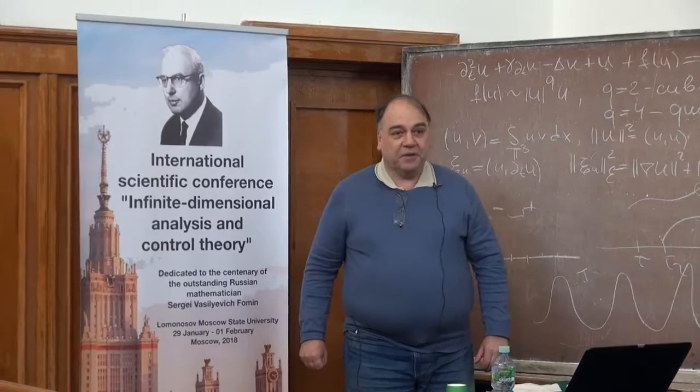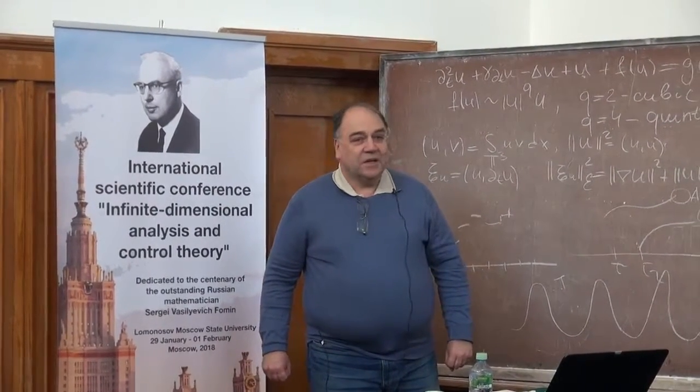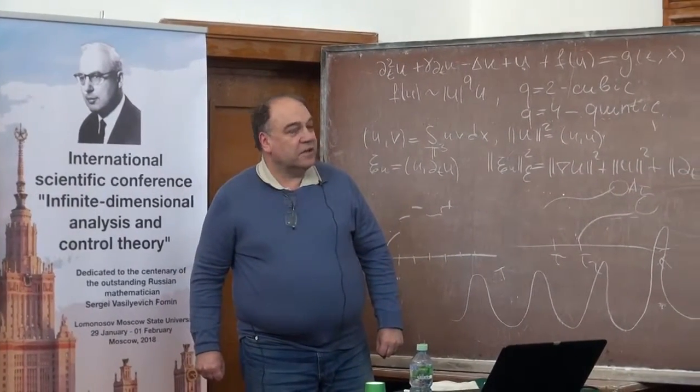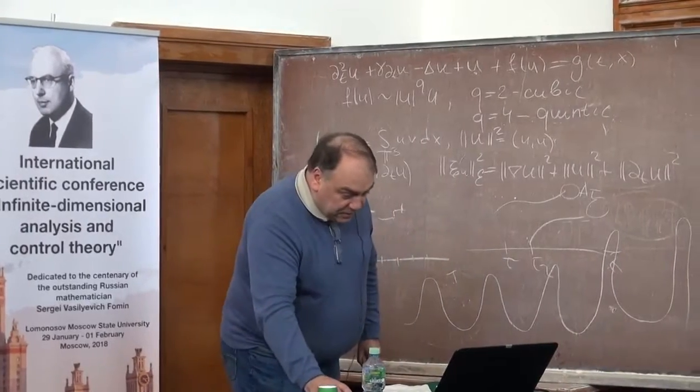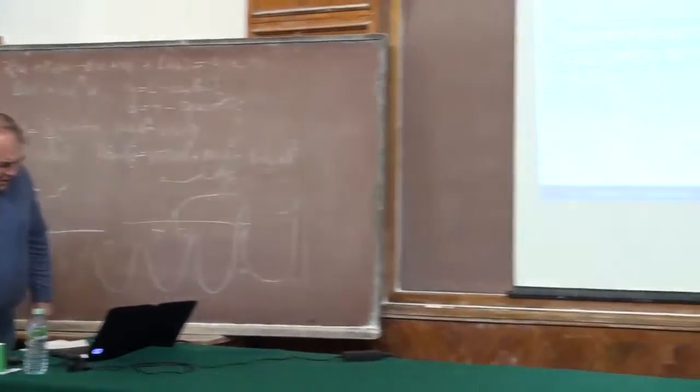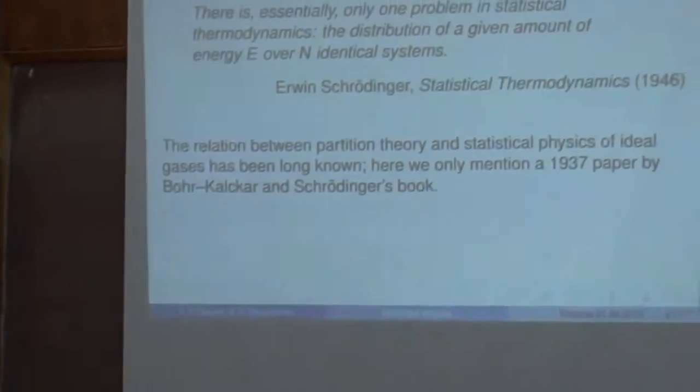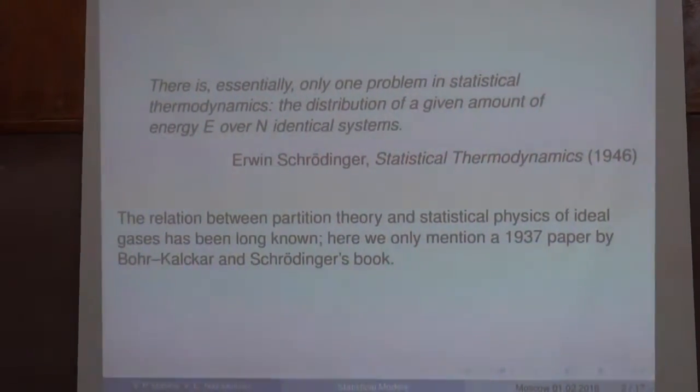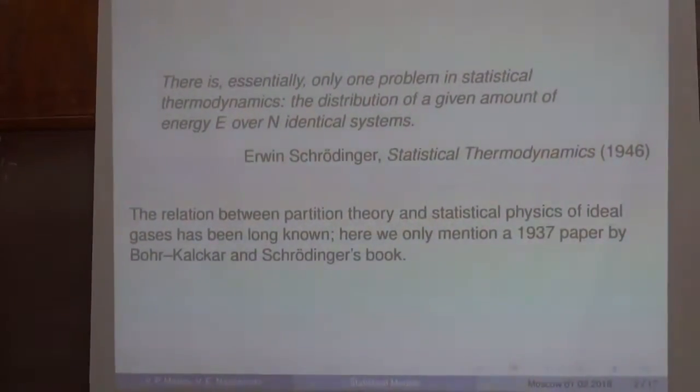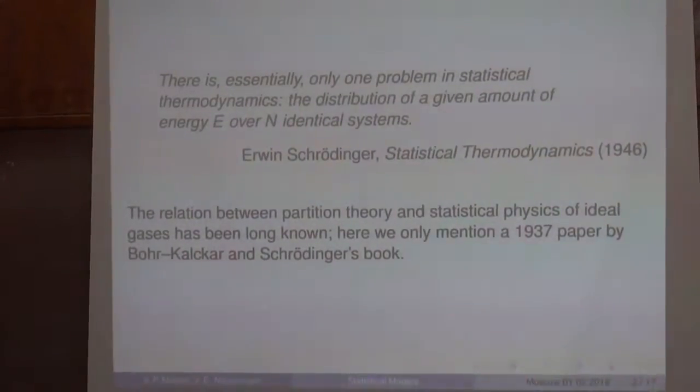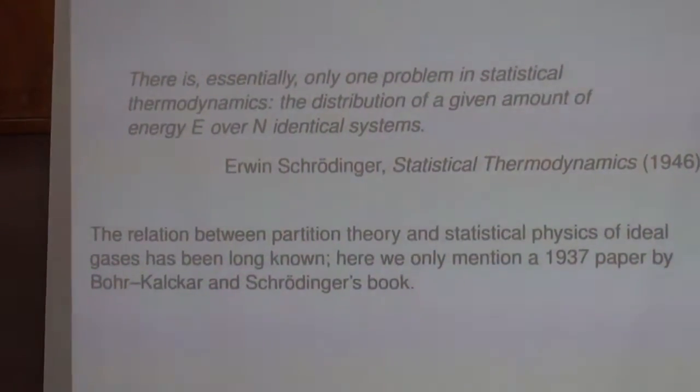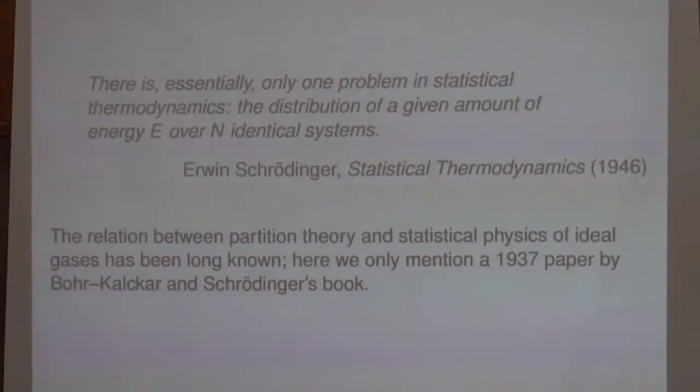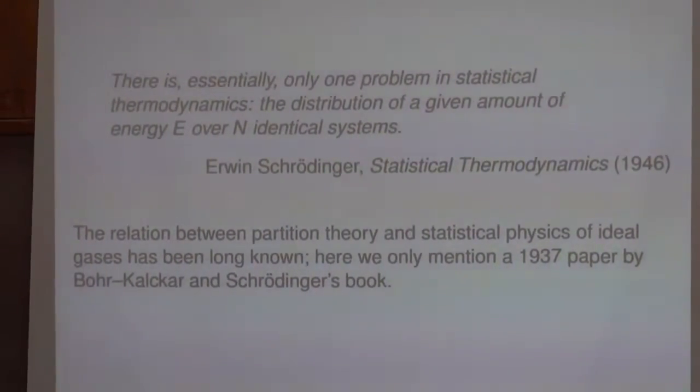Namely, the relationship between statistical models of ideal gas and some problems of analytic number theory. Let me start by quoting Erwin Schrödinger, who says that there is essentially only one problem in statistical thermodynamics, namely the distribution of a given amount of energy E over unidentical systems. This problem is related to some problem in number theory.